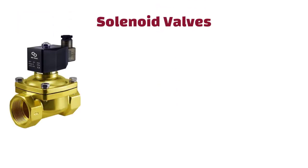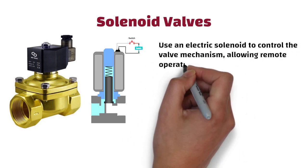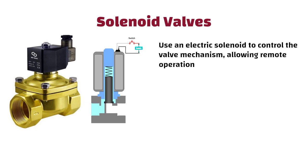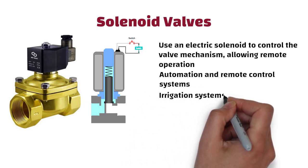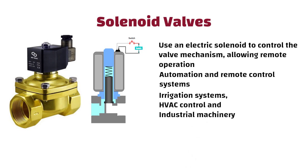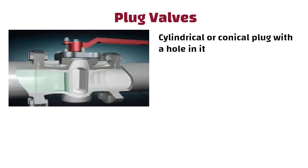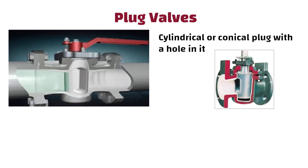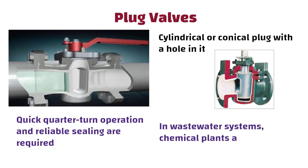Solenoid valves use an electronic solenoid to control the valve mechanism, allowing remote operation. These types of valves are commonly used in automation and remote control systems such as in irrigation systems, HVAC control and industrial machinery. Plug valves use a cylindrical or conical plug with a hole in it, which aligns with the flow path when open. This type of valve is used in applications where quick quarter-turn operation and reliable sealing are required, such as in wastewater systems, chemical plants and oil refineries.